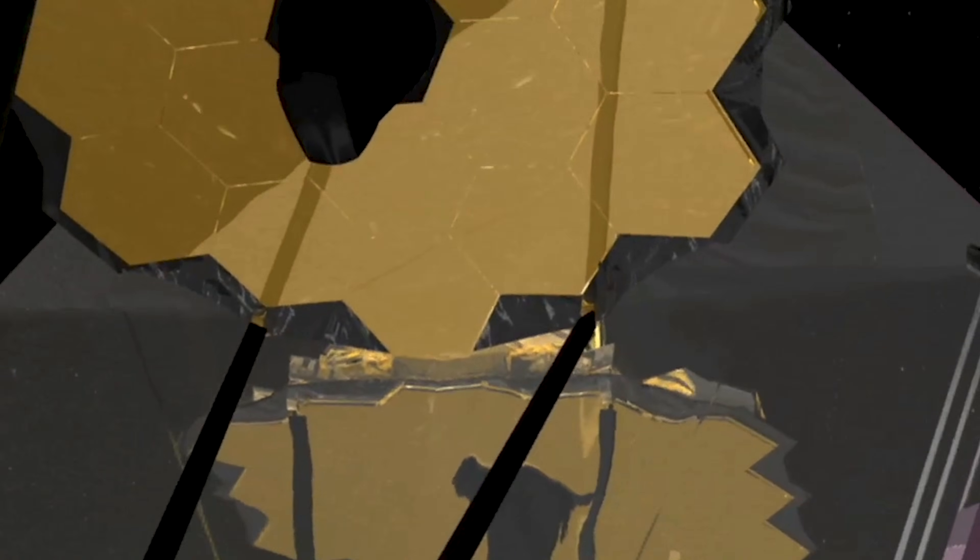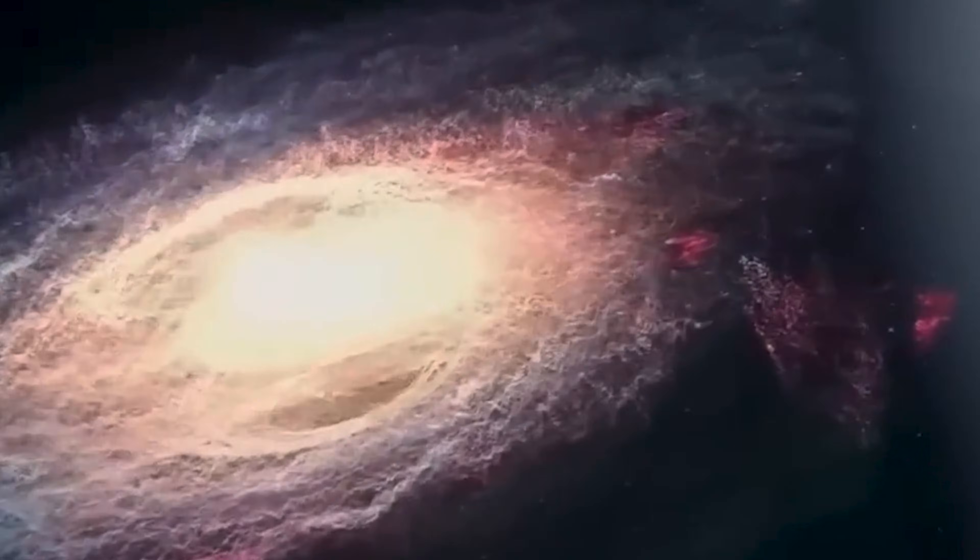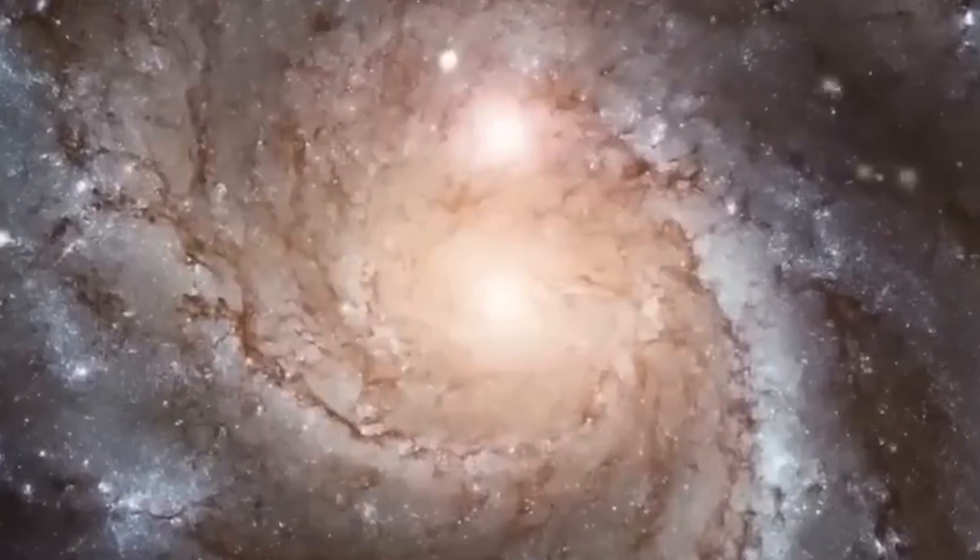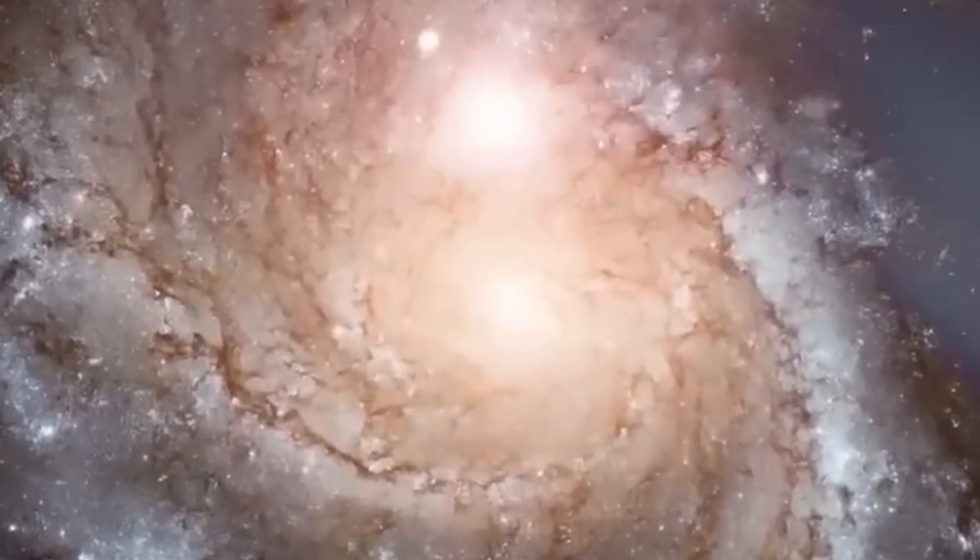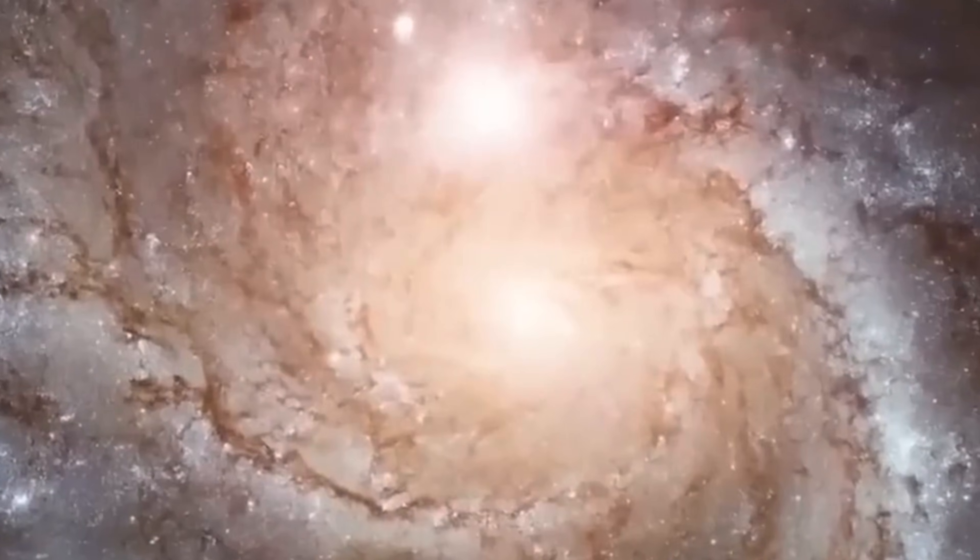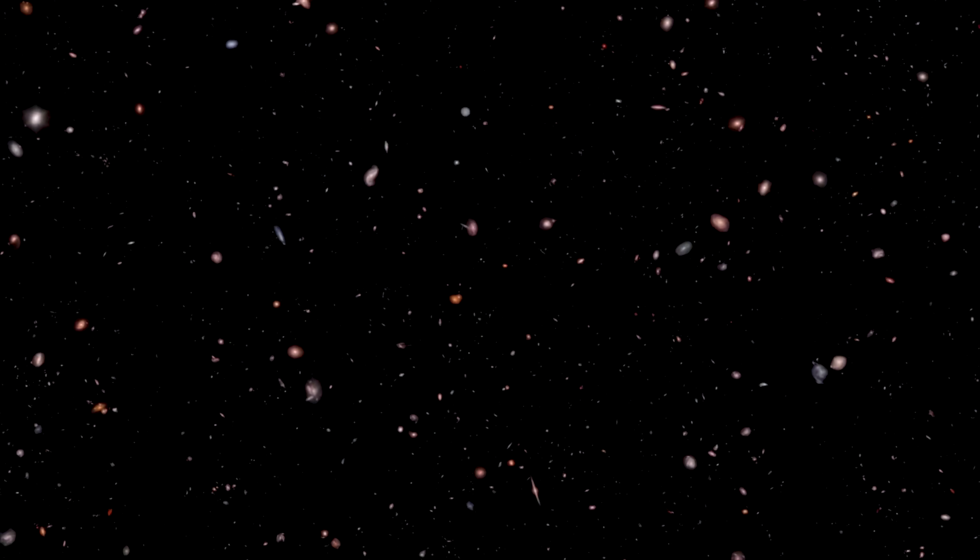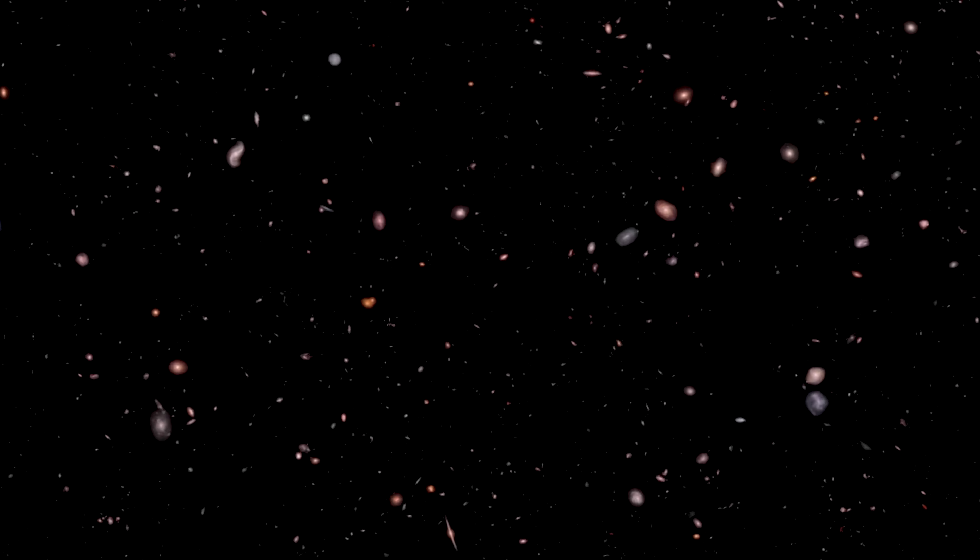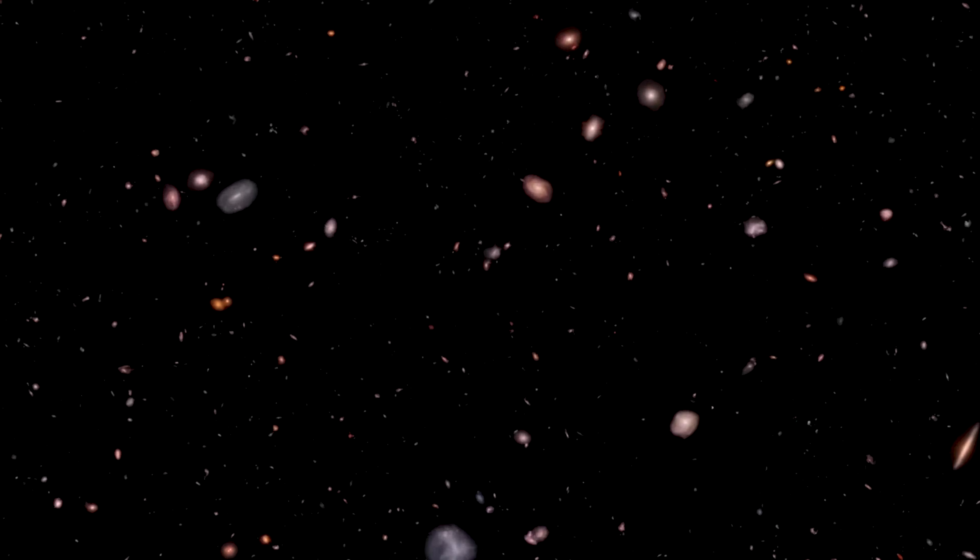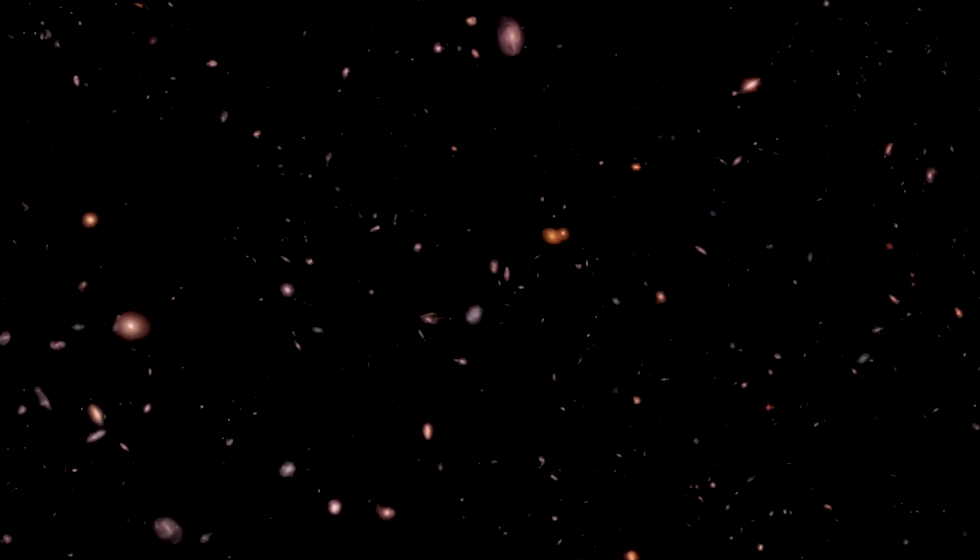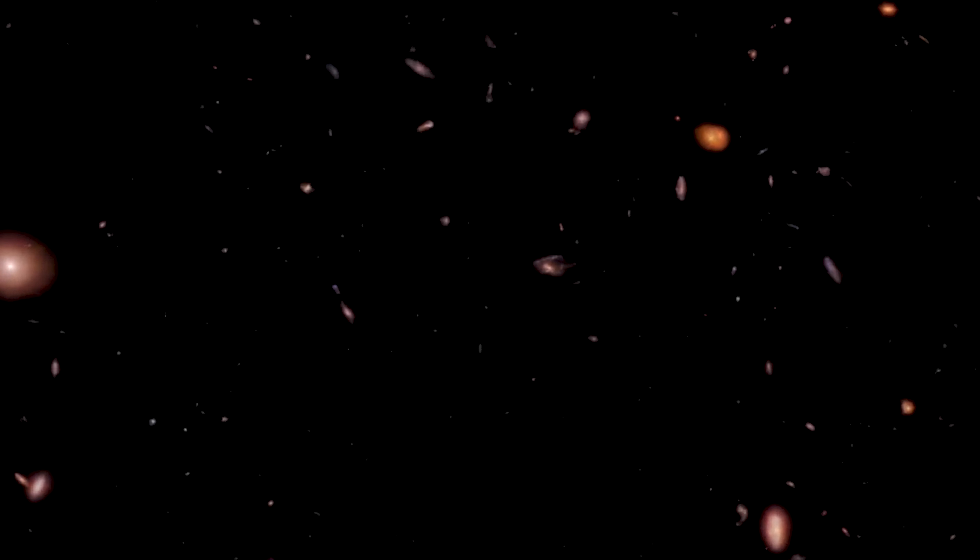This telescope is the James Webb Space Telescope, and it's seeing things no one was prepared for. Webb doesn't just look far away, it looks back in time. Every faint glow it captures began its journey billions of years ago, long before Earth existed, long before the sun ignited. And when Webb aimed at the most ancient regions of the cosmos, places so distant they should reveal the universe in its infancy, it found something shocking.